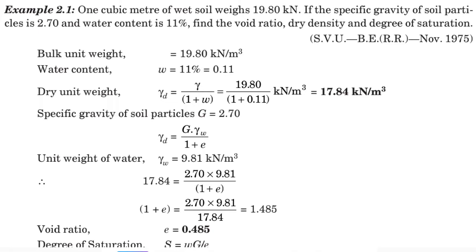So the void ratio e, dry density gamma d, and degree of saturation S. The given values are bulk unit weight gamma equals 19.80 kN per meter cube and water content w equals 11%, that is 0.11.